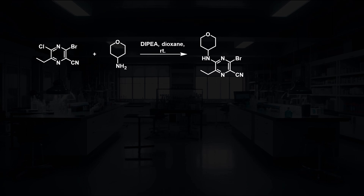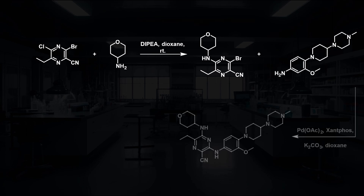Another SNAr reaction is used on this pyrazine core to install a 4-amino tetrahydropyran. The previous fragment can then be attached to this core using a Buchwald-Hartwig reaction using a palladium acetate and Xantphos catalytic system.